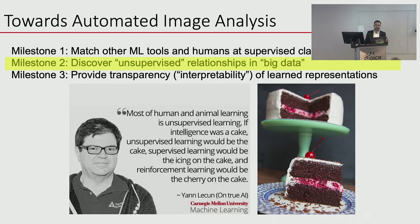Yann LeCun, a Turing Prize winner with Geoffrey Hinton, has described how important unsupervised learning is: if intelligence were a cake, unsupervised learning would be the whole cake, and supervised learning is just the icing on the cake. Most human and animal learning is in fact unsupervised. If that analogy is true, we're nowhere near implementing these tools in a way that's truly transformative.